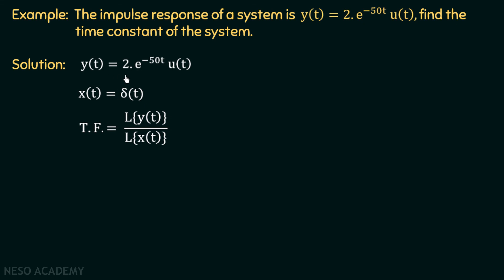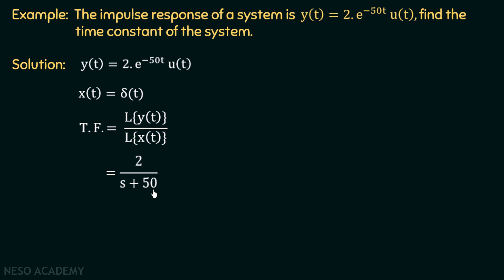The Laplace transform of y(t) = 2*e^(-50t)*u(t) is 2/(s+50). The Laplace transform of an impulse signal is 1. Taking the ratio of these two Laplace transforms, we get the transfer function G(s) = 2/(s+50). This is not yet in the standard time constant form.